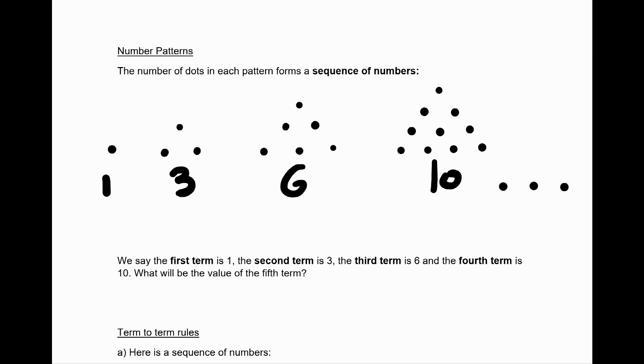The number of dots in each pattern forms a sequence of numbers. We say the first term is 1 because in the first pattern there's 1 dot. In the second pattern there are 3 dots, so the second term is 3, the third term is 6, the fourth term is 10, and so on. What will be the value of the fifth term?